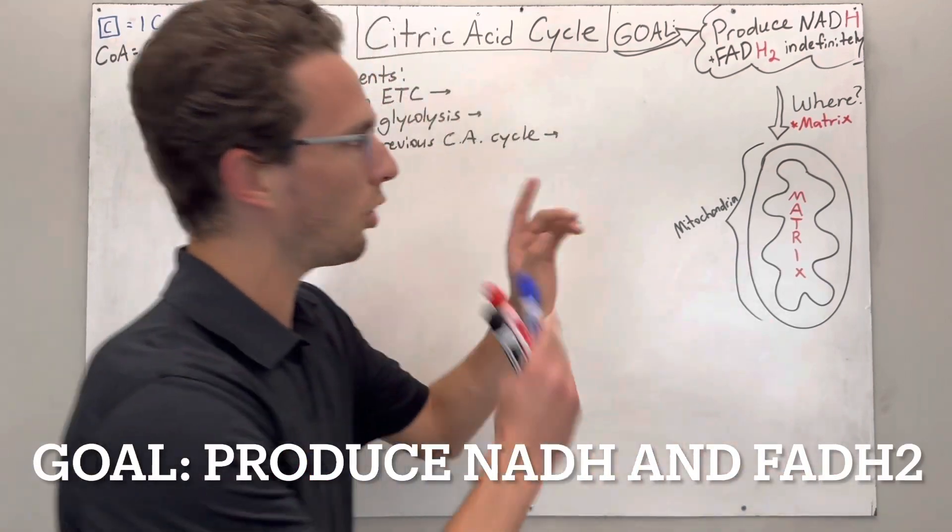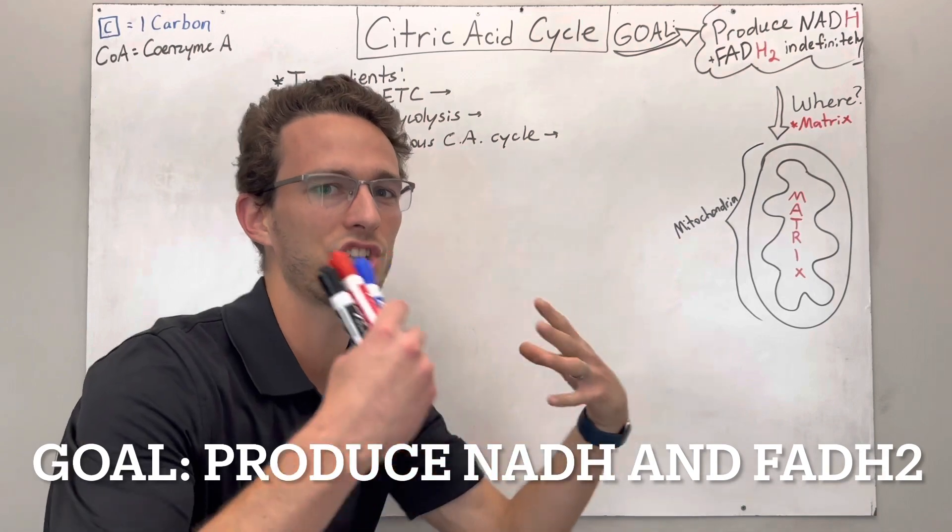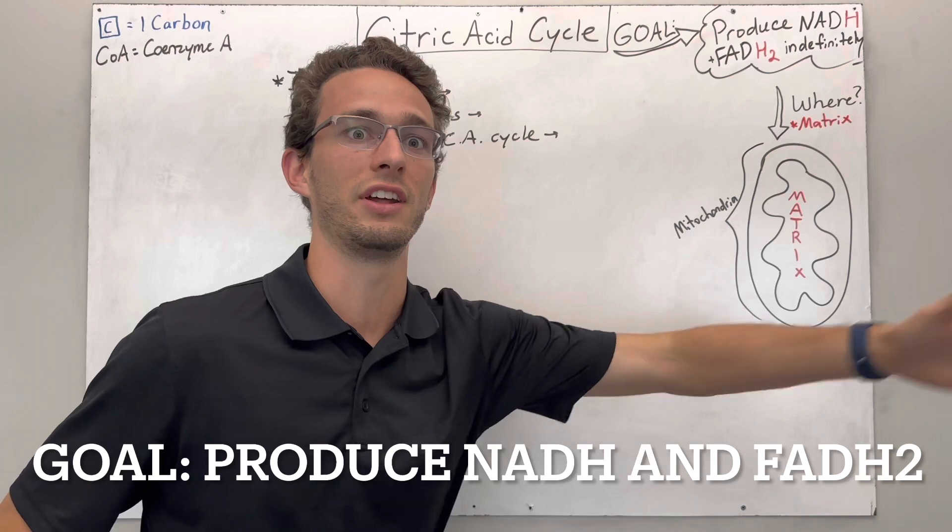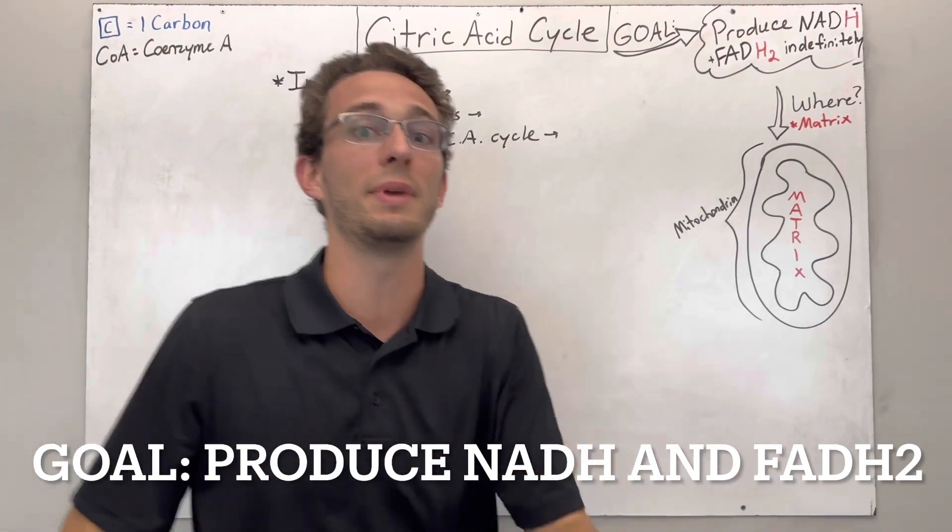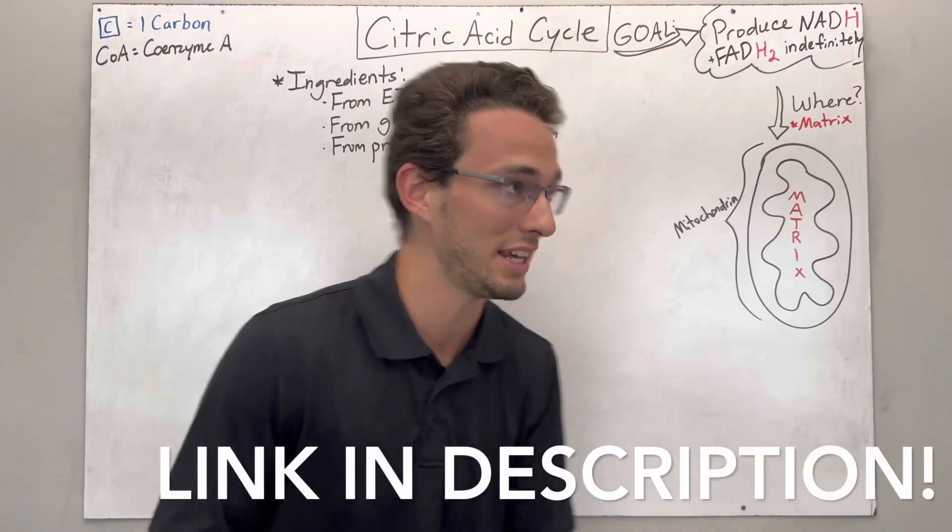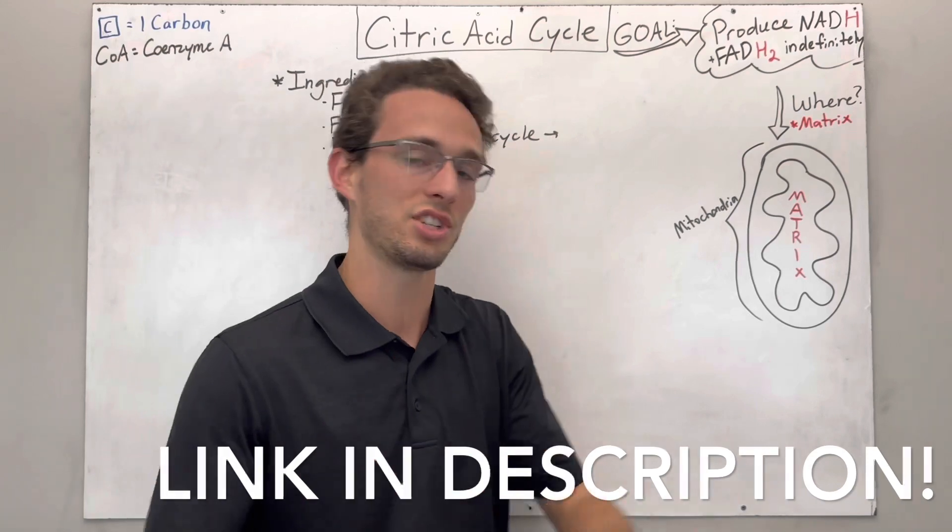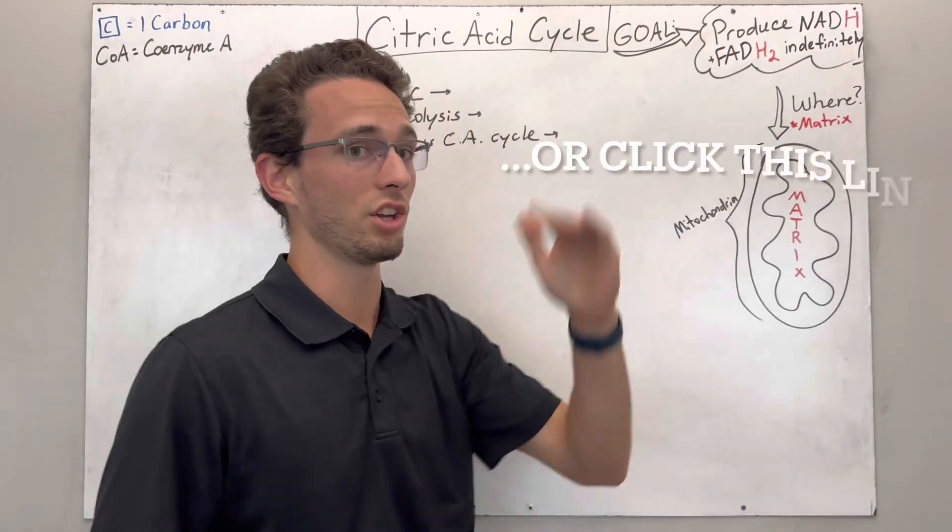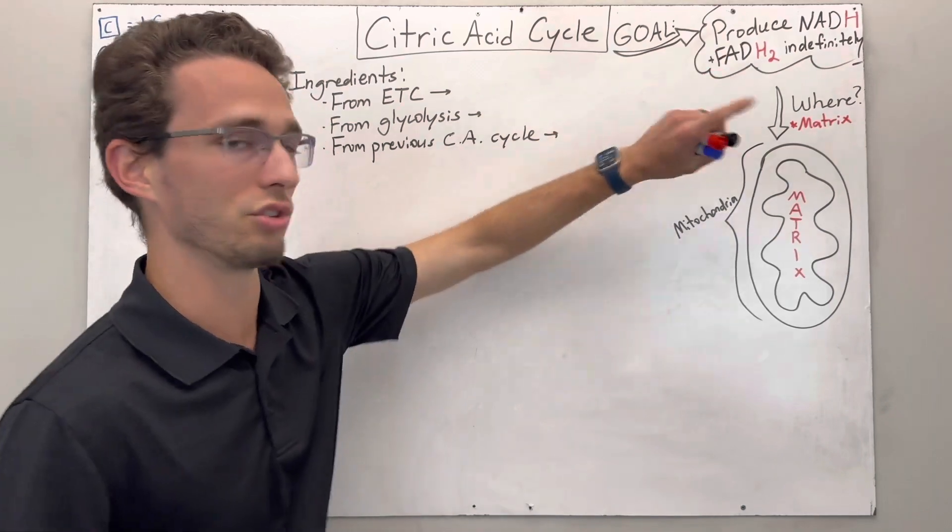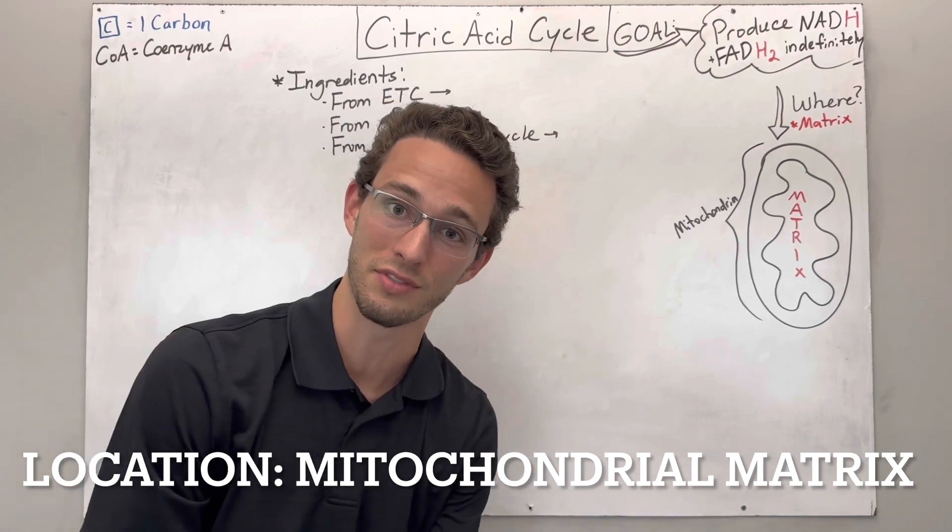Why are we doing this? The goal of the citric acid cycle is to produce these high energy molecules called NADH and FADH2 indefinitely. We want this to continue on and on because if you've watched my electron transport chain video of how we make ATP, these two guys are the major players in that process. So if you haven't watched that, go back. I'll tag it right here. You can go watch that before this one.